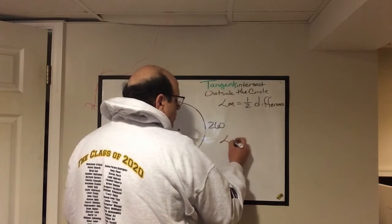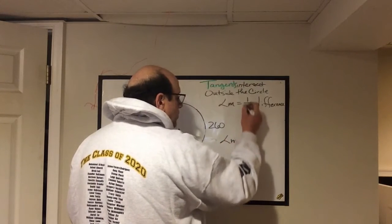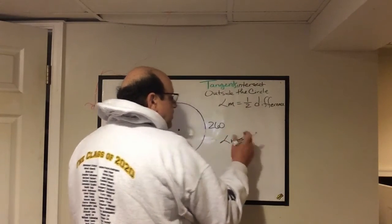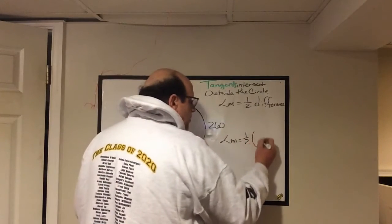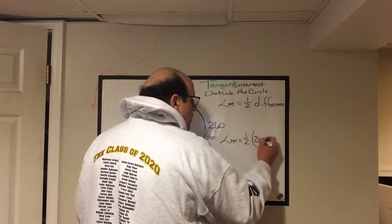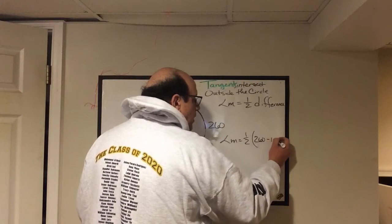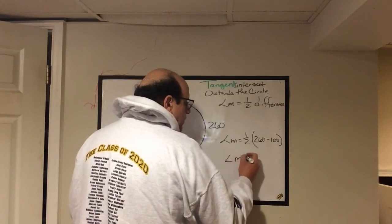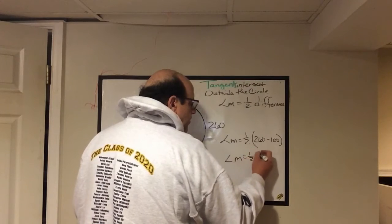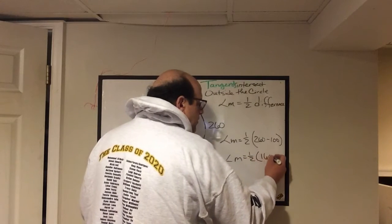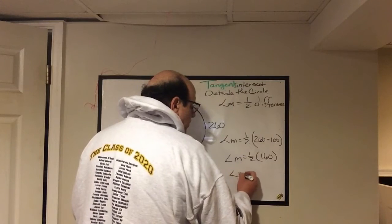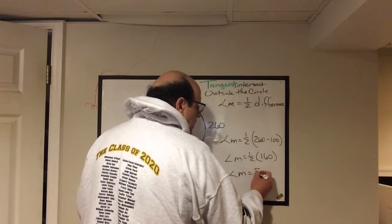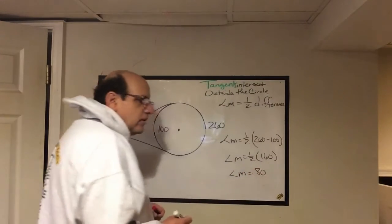So I'm going to write it down here. The measure of the angle is equal to one half the difference of the two arcs. So I'm going to say it's 260 minus 100, and that will give me the measure of the angle equals one half of 160. Therefore, the measure of the angle has to be 80.